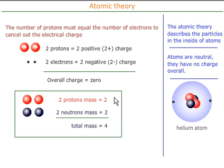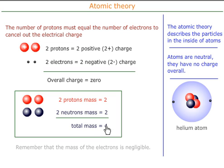The masses, however, add up. The proton masses and the neutron masses add up to give the total mass of the atom. In this particular case, the mass is four. Remember that the mass of the electrons is negligible.